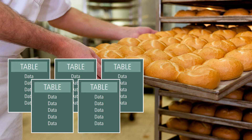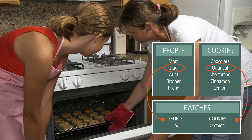The thing that really sets databases apart from any other way of storing data is connectivity. We call a database like this a relational database. A relational database is used to understand how lists and the objects within them relate to one another. To explore this idea, let's go back to the simple database with two lists — people and cookies. You decide to create a third list to keep track of the batches of cookies you make and who they're for. Because you're only making cookies you know the recipe for and giving them to your friends, this new list will get all the information you need in one list. See how this third list uses words that appeared in the first two lists? A database is capable of understanding that the dad and oatmeal cookies in the batch list are the same things as the dad and oatmeal in the first two lists.